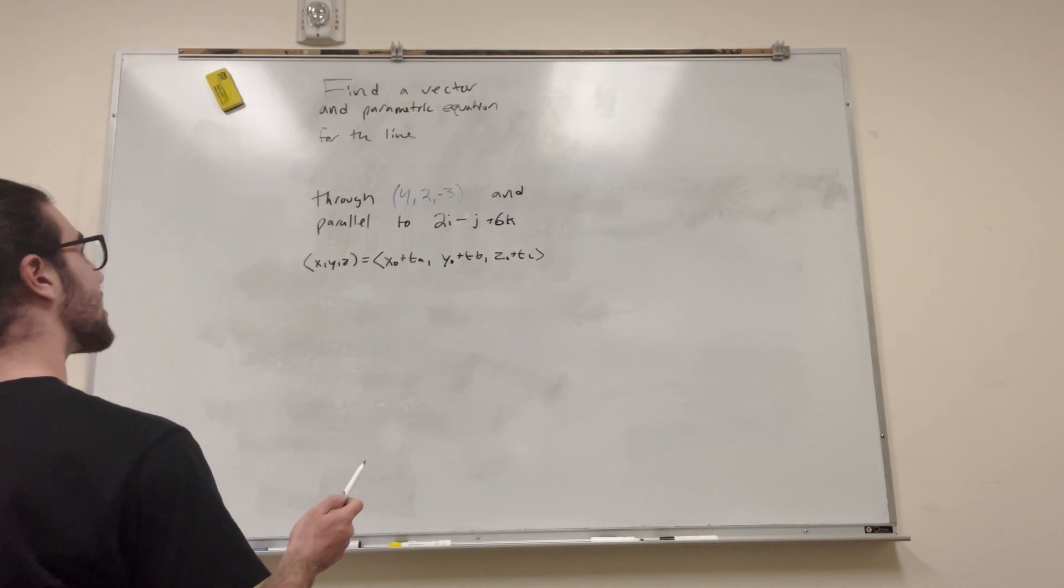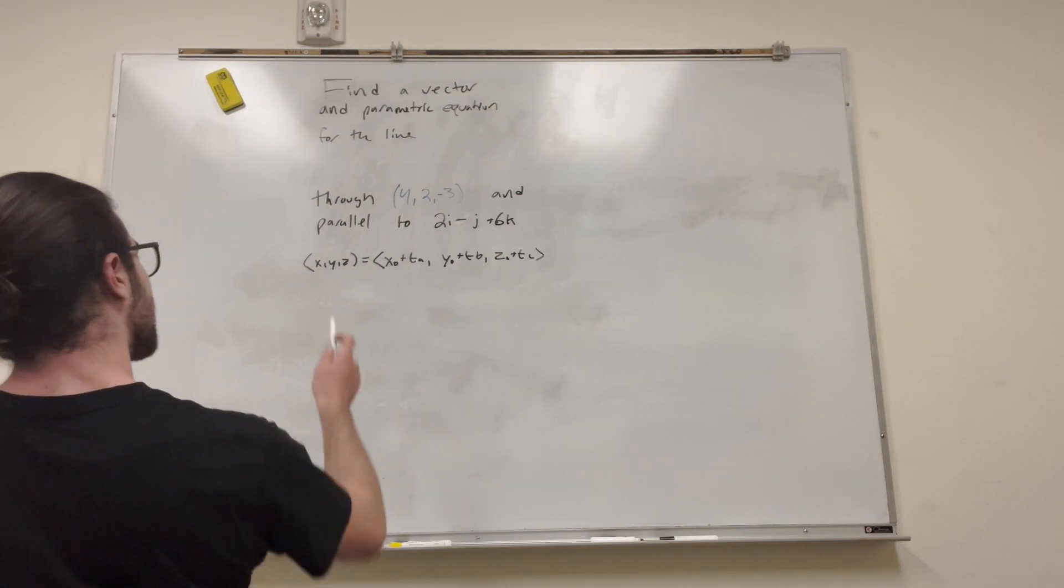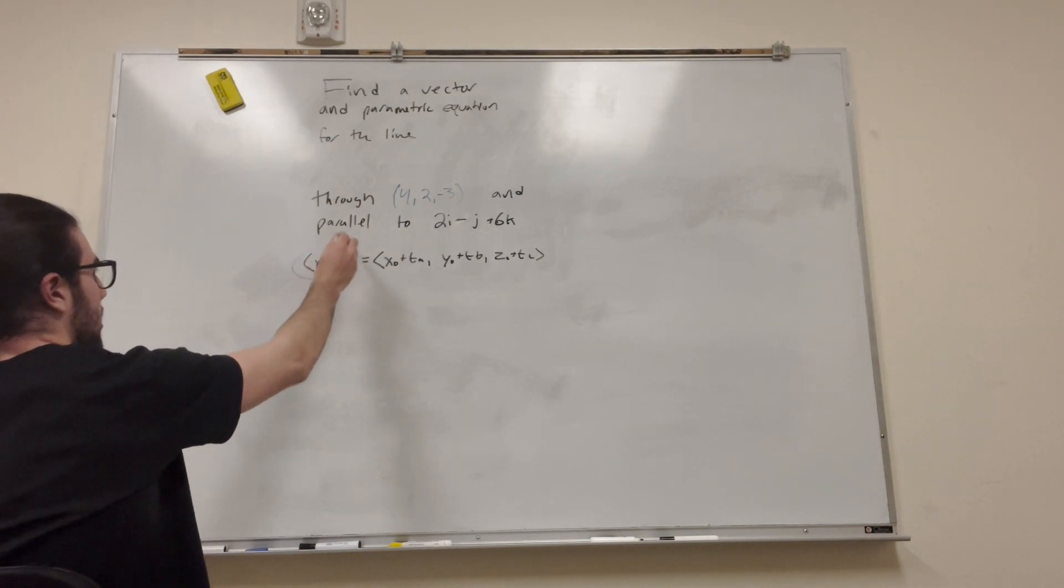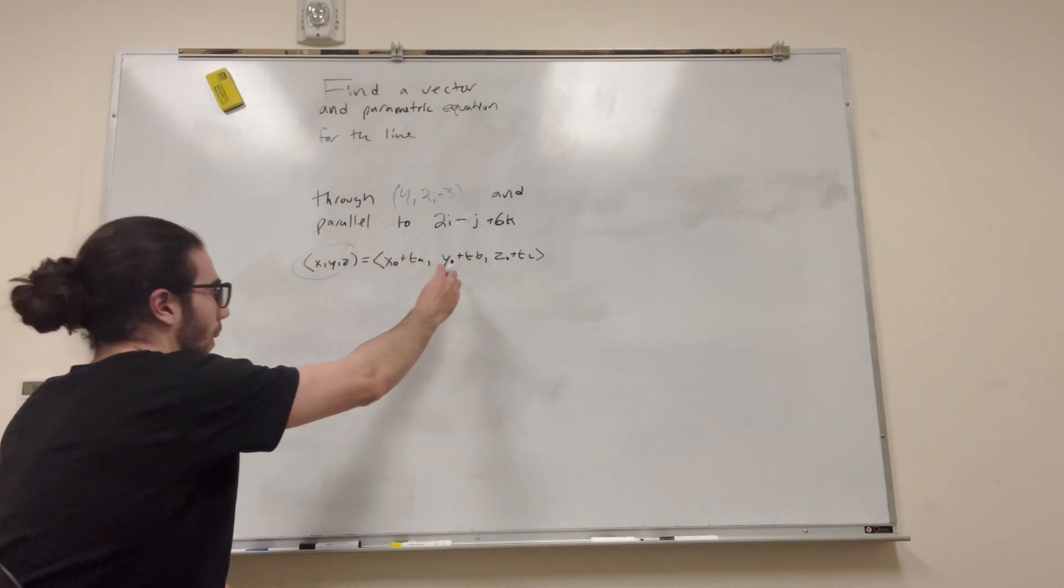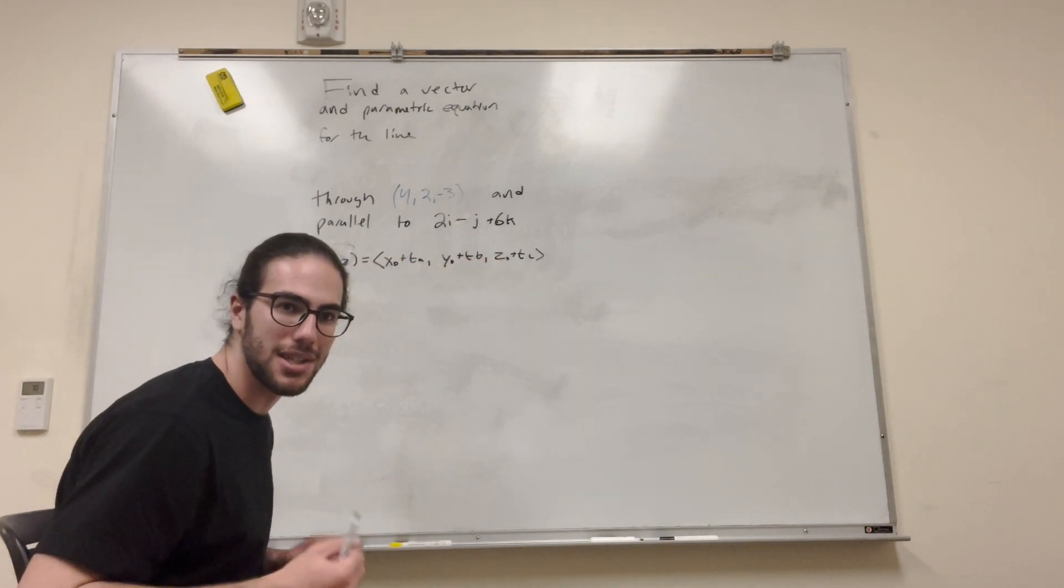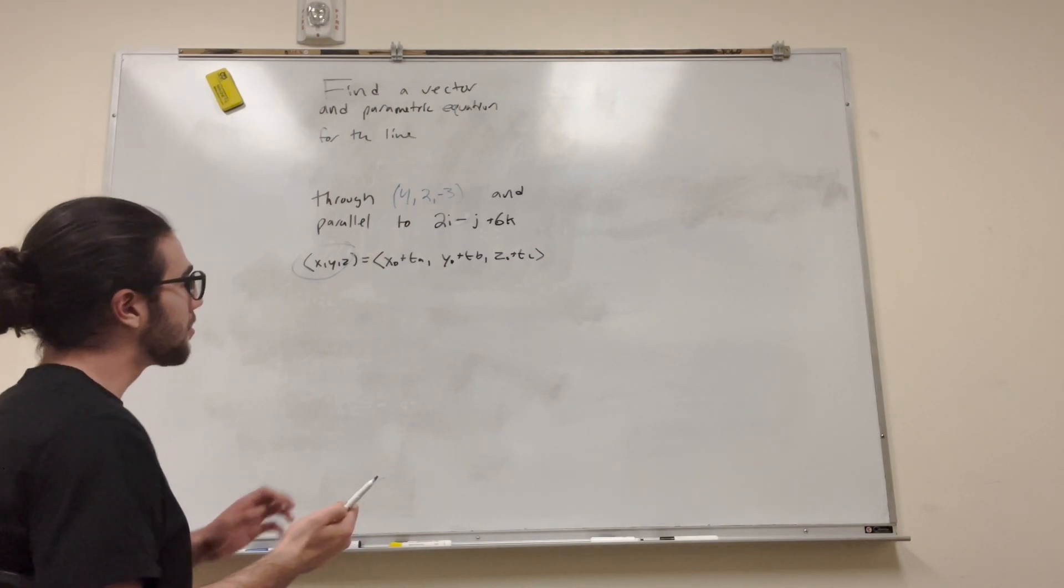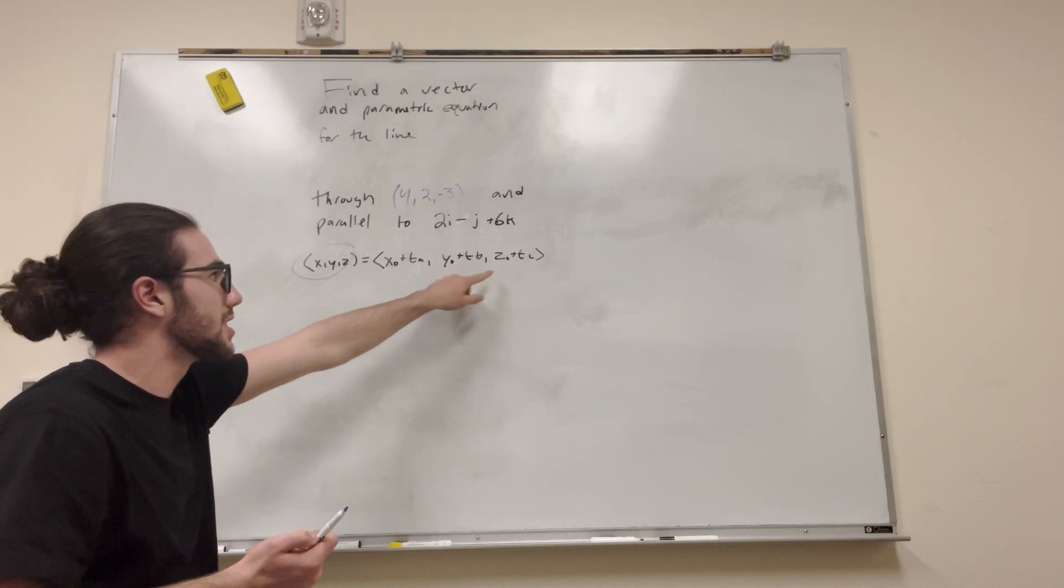What this is, is it's a vector. So this vector is basically saying that this vector is equal to an initial point. X naught, Y naught, and Z naught all represent just a point on the line that it starts at. And then plus T of A, or T of B, or T of C.